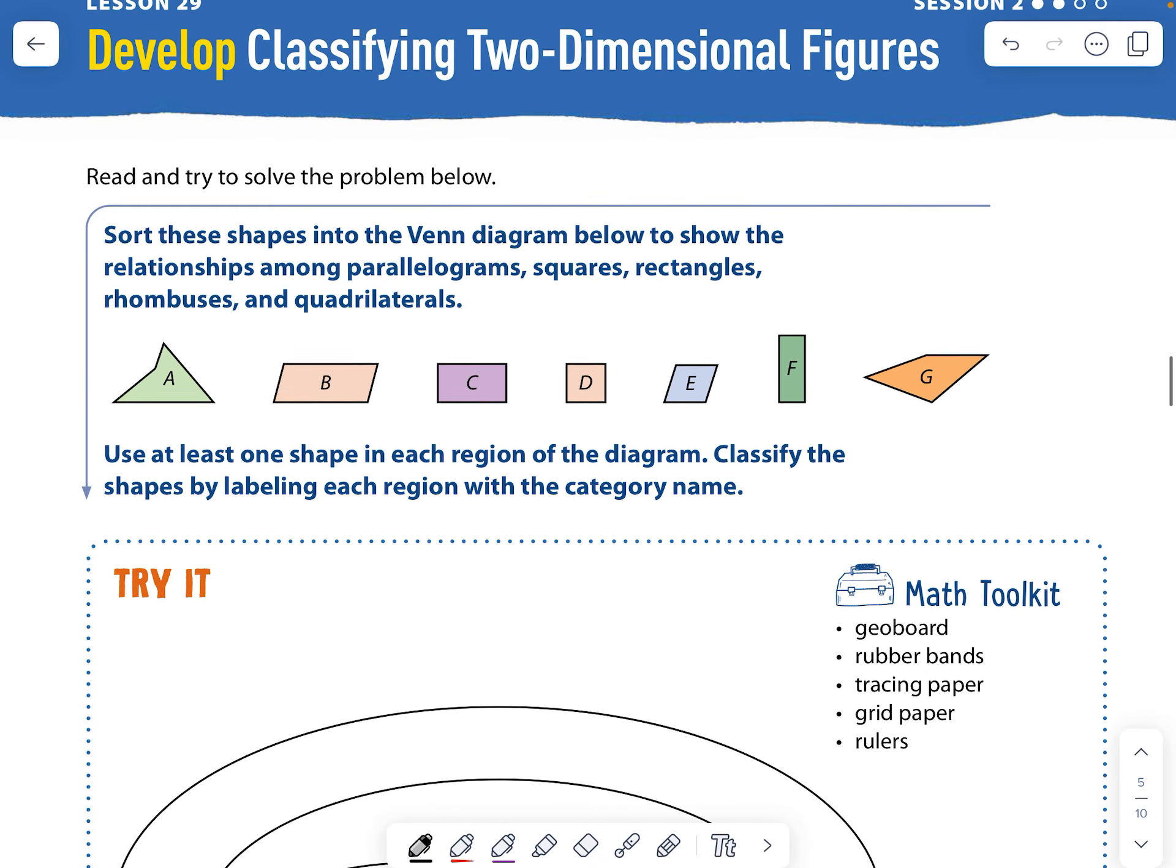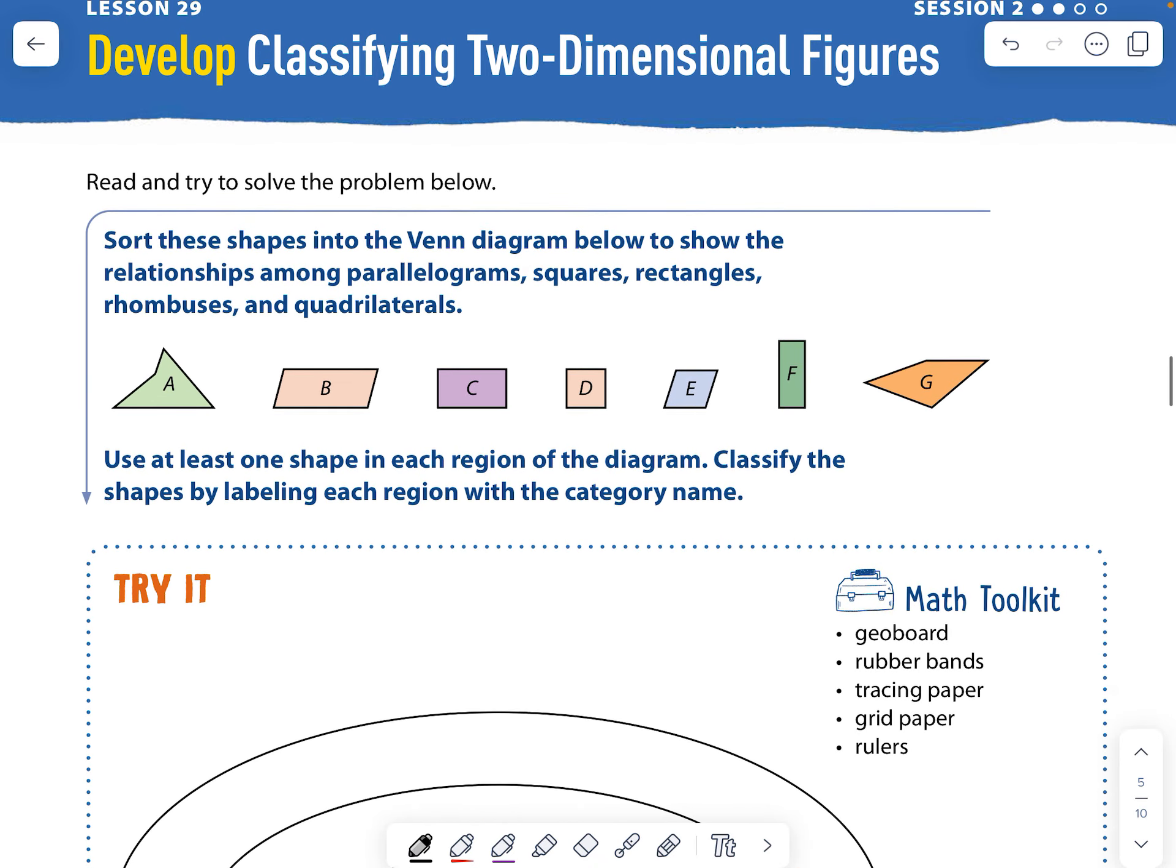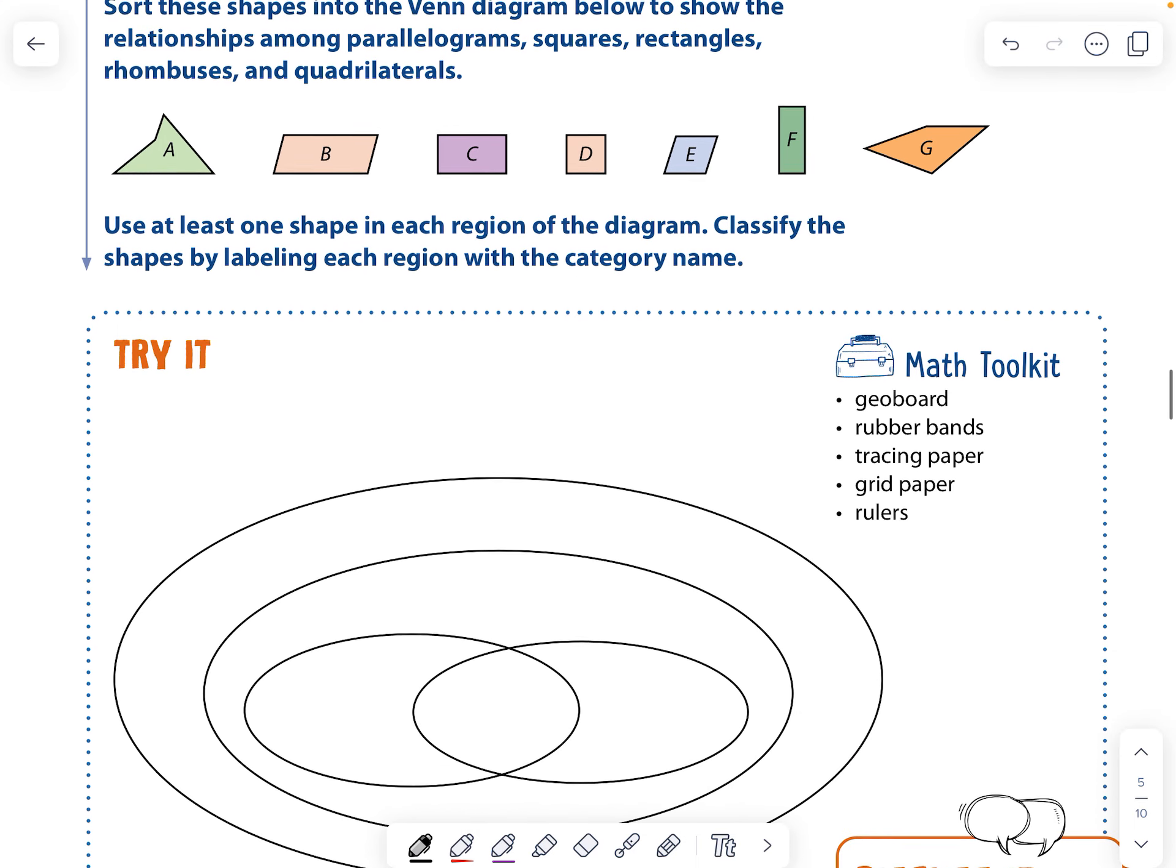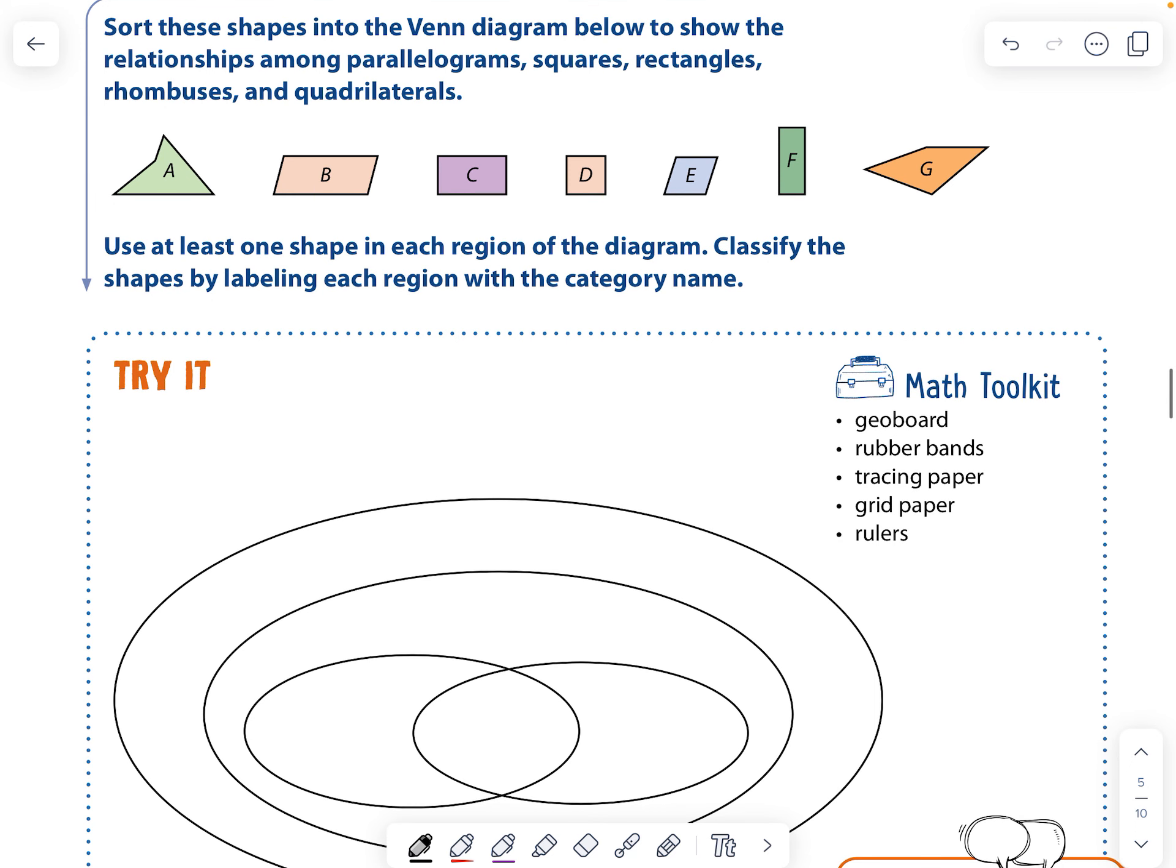Remember, pause it at any time. I just am doing this as fast as I can so that you can rewatch this and get to work. Okay. So we have to sort these shapes into the Venn diagram. Okay. I'm going to first count the sides. Counting the sides will help.